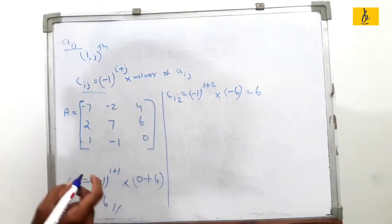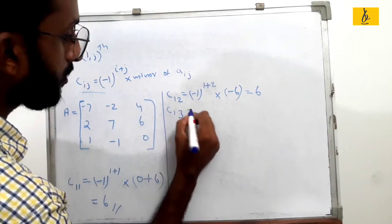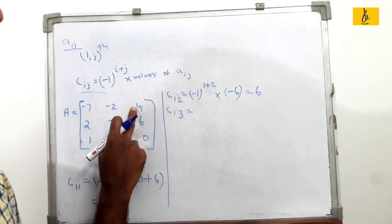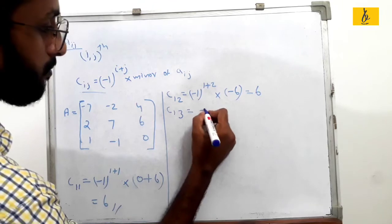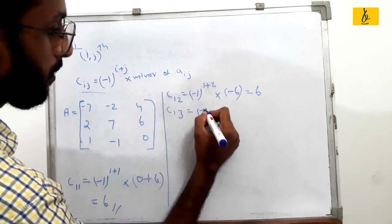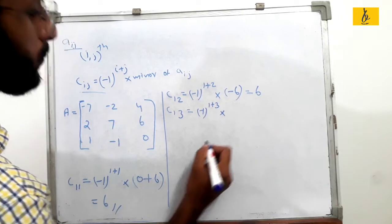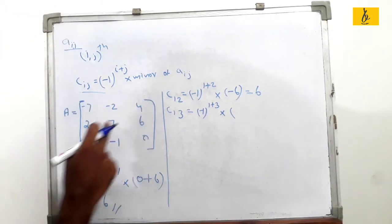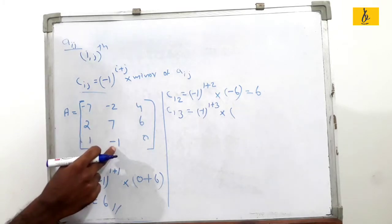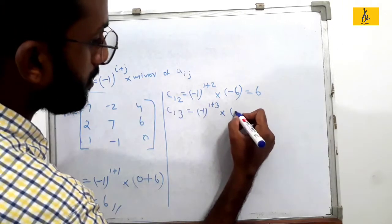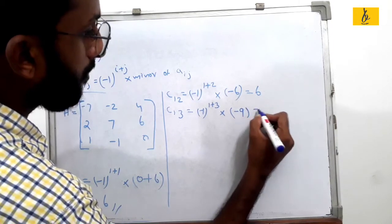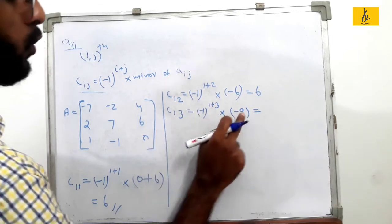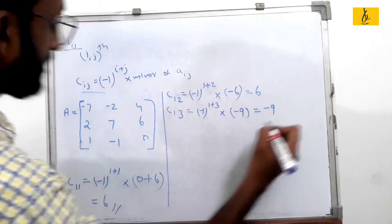C_13 cofactor: minus 1 raised to 1 plus 3, into the minor. Delete the row and column: 2 into minus 1 minus 2, giving minus 2 minus 7 equals minus 9. Then 4 is the power, so minus 1 raised to 4 is 1, times minus 9 gives C_13 equals minus 9.